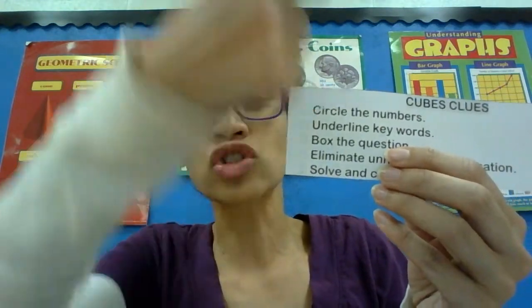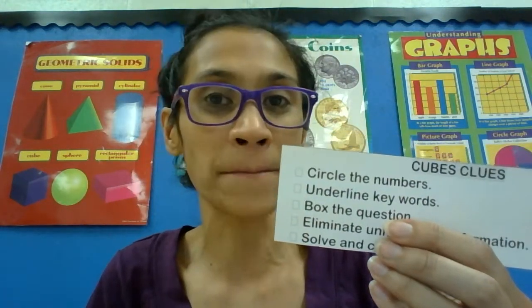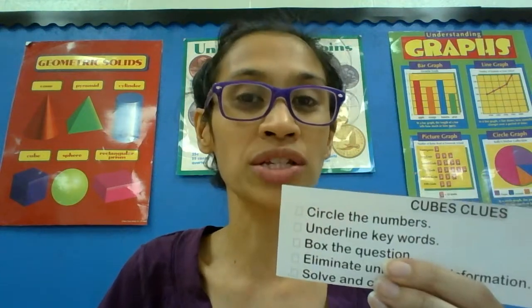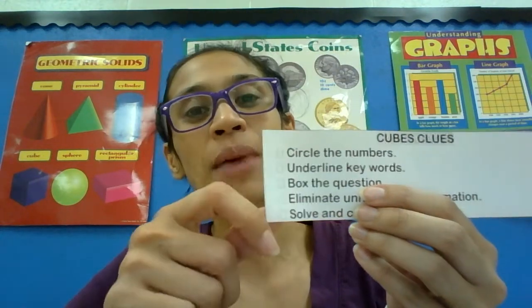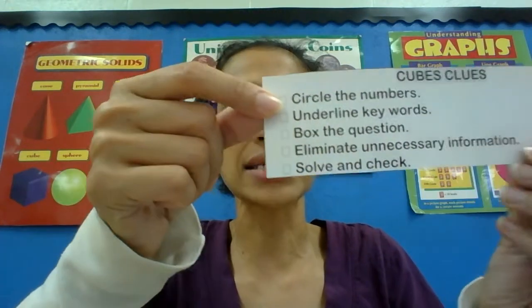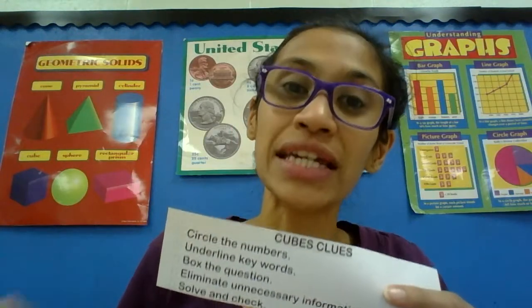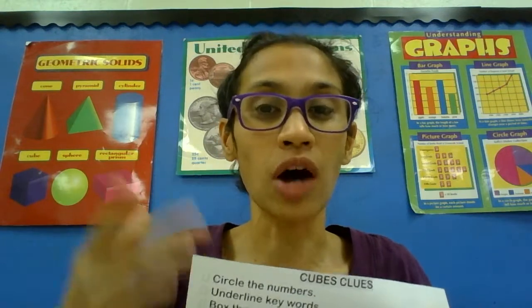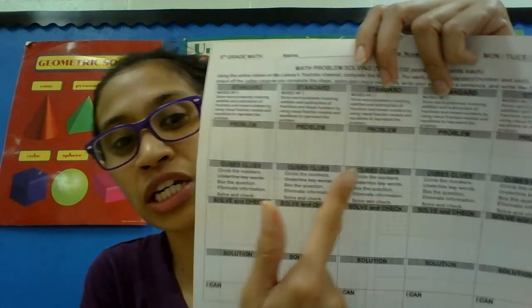Some words there you know, some you don't, and I'll go through them with you. So the next thing is the problem — you're going to write the problem; find the problems in the next video. Don't forget your cubes clues right here. As you solve each problem, make sure that you check off each step that you do. The C step is to circle the numbers. The U step is to underline keywords. The B step is to box the question and eliminate any unnecessary information. And the S step is to solve and check.